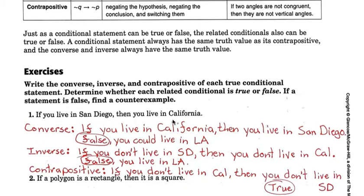If you live in San Diego, then you live in California. Now our converse, we're just going to switch the two. If you live in California, then you live in San Diego. Well, that's false because lots of people don't live in San Diego but still live in California. So my example is you could live in L.A.